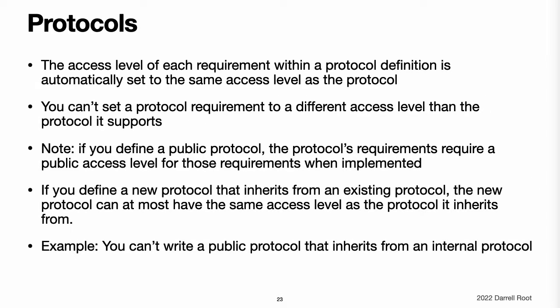Protocols. If you want to assign an explicit access level to a protocol type, do so at the point you define the protocol. This enables you to create protocols that can only be adopted within a certain access context. The access level of each requirement within a protocol definition is automatically set to the same access level as the protocol. You cannot set a protocol requirement to a different access level than the protocol it supports. This ensures that all of the protocol's requirements will be visible on any type that adopts the protocol. Note, if you define a public protocol, the protocol's requirements require a public access level for those requirements when they are implemented. This behavior is different from other types where a public type definition implies an access level of internal for the type's members.